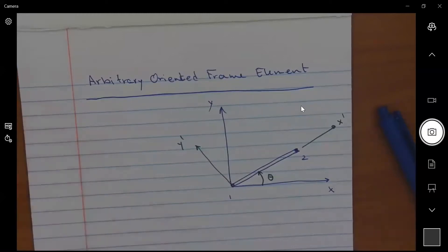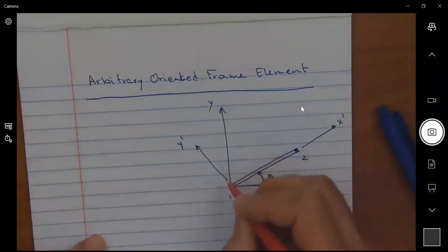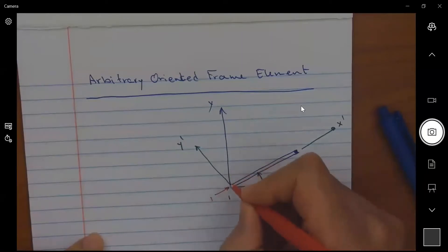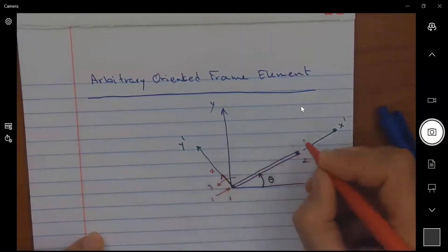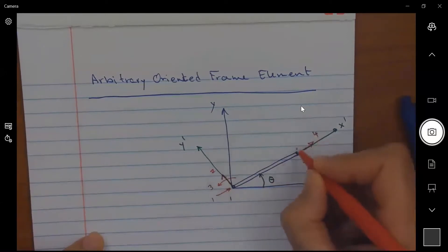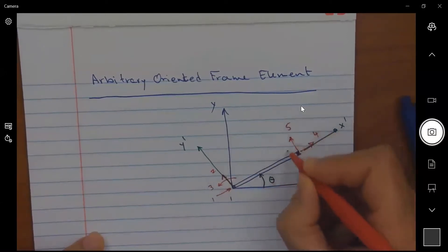Now, we found a relationship for the degrees of freedom using the local degrees of freedom, where we had one, two, three, four, five, and six.